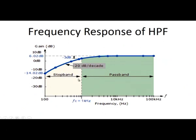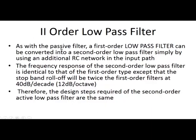The frequency response of the high pass filter shows the response increasing until the lower cutoff frequency, where it is at minus 3 dB of the maximum value; after the cutoff frequency the gain is the maximum value A. Previously we discussed the first order low pass and high pass filter with roll-off rates of minus 20 dB per decade and plus 20 dB per decade respectively.